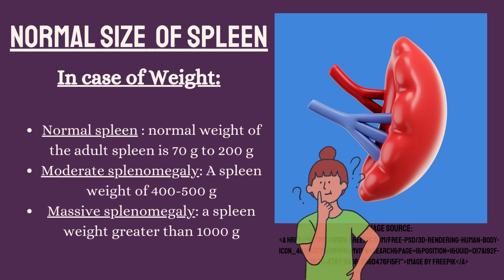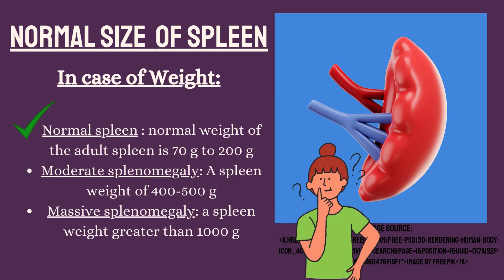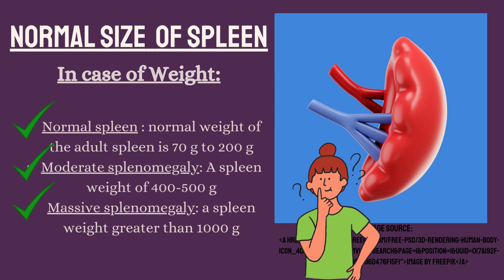In terms of weight, the normal weight of the adult spleen is 70 g to 200 g. For moderate splenomegaly, a spleen weighs from 400 to 500 g. For massive splenomegaly, a spleen weighs greater than 1000 g.